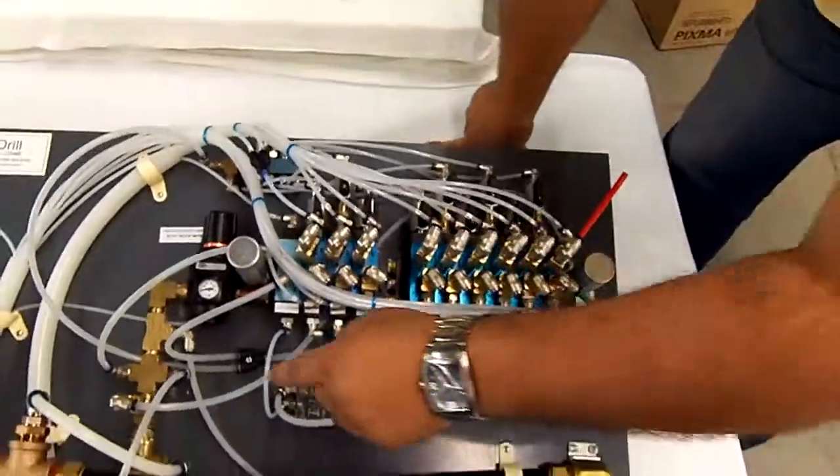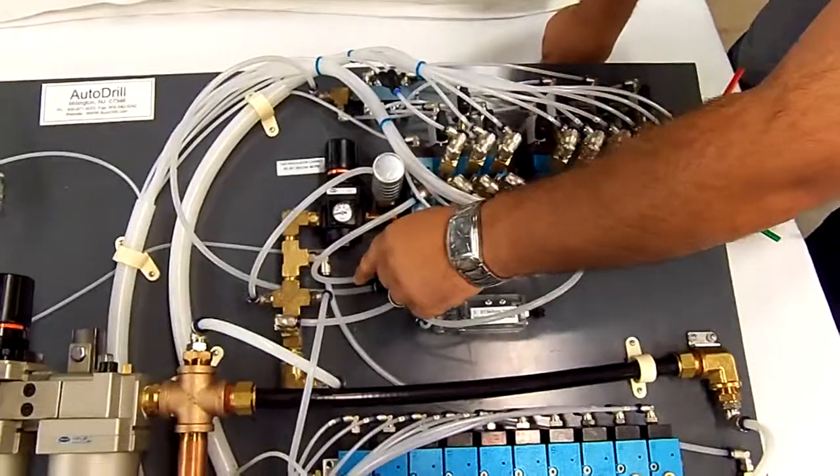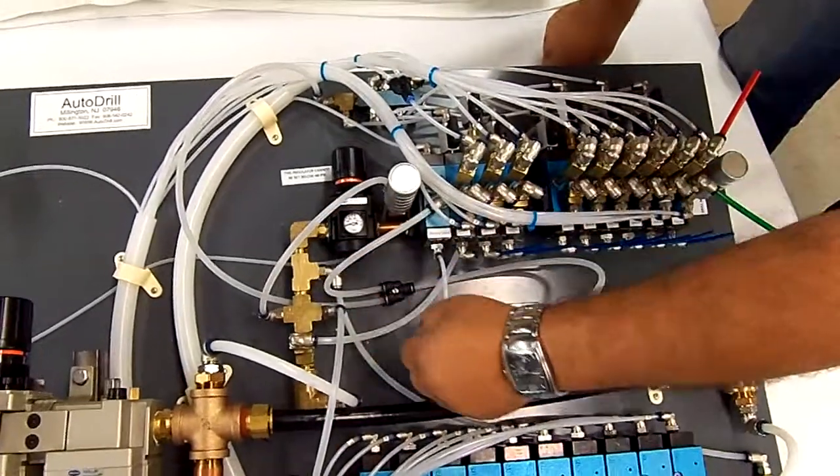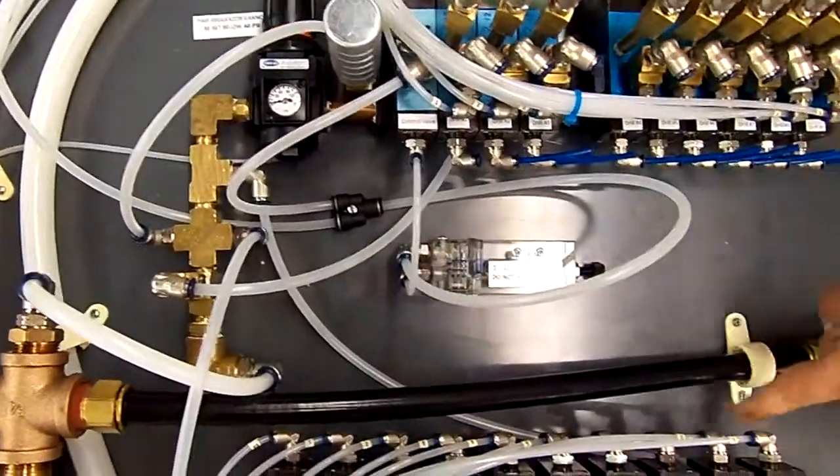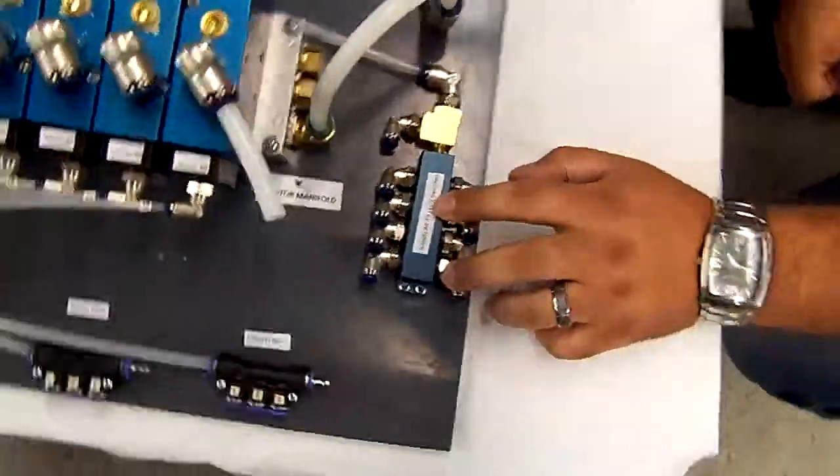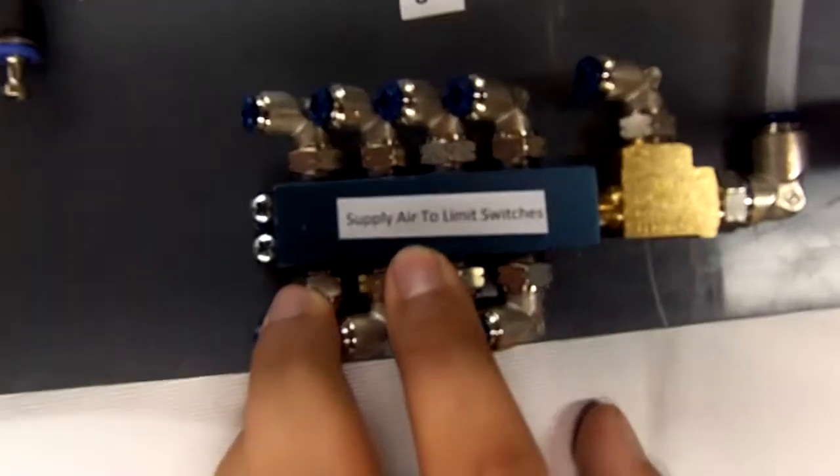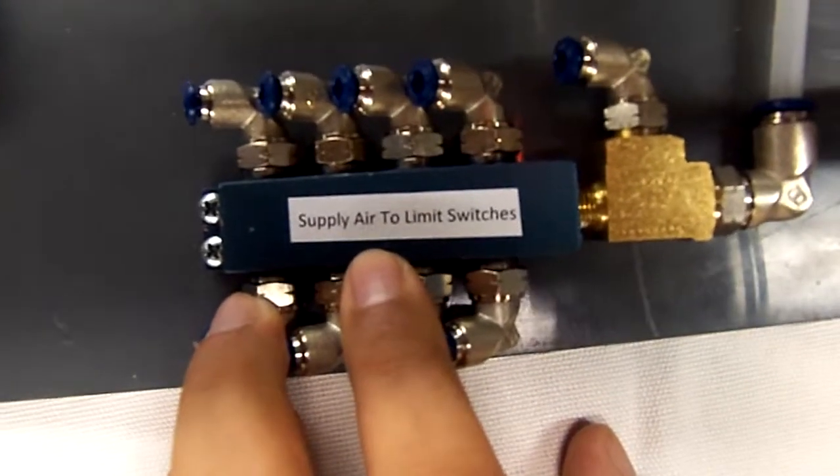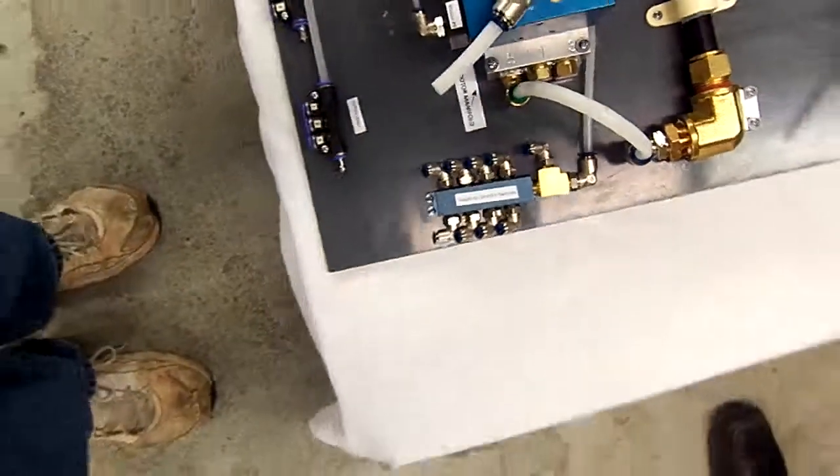It's also supplying air through this tube down here to this tiny manifold. This label says supply air to all the limit switches. Every drill has its own independent limit switch. I'll show you a quick illustration over here.